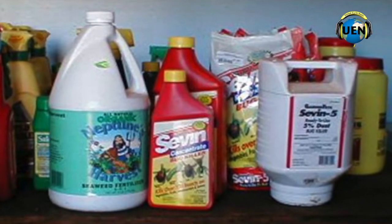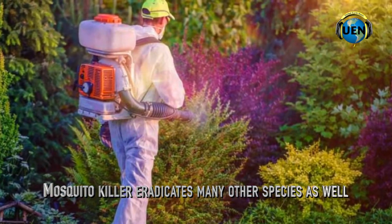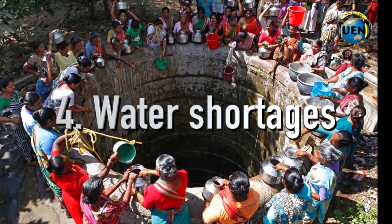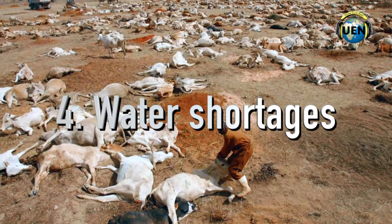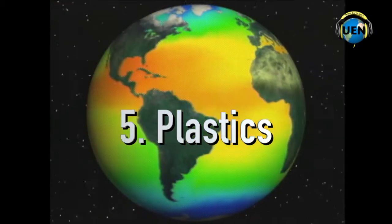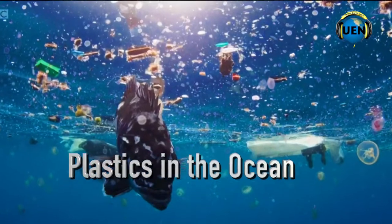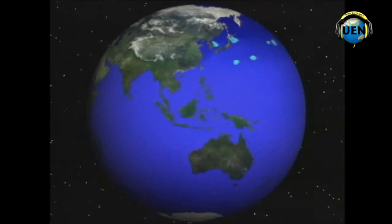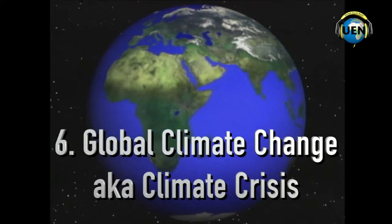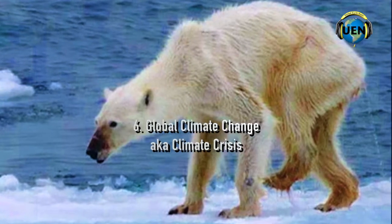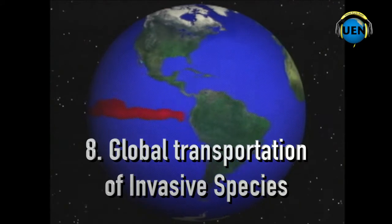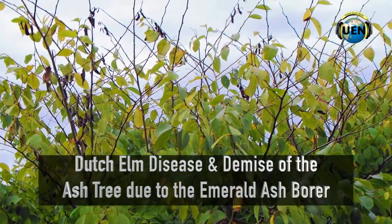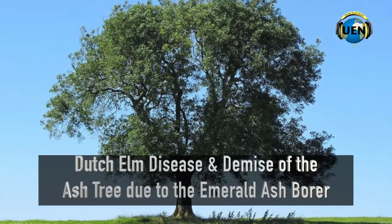Using pesticides in your garden and a bug zapper to kill mosquitoes kills many other species as well. A fourth cause is that water supply shortages are increasing throughout the planet, putting stress on plants and animals and causing them to die off. Plastics in the ocean break into microscopic particles that are consumed by fish and kill them — and these are the fish that we are eating. Global climate change affects the survival of many species, and they can die because their food supplies disappear. The transportation of organisms around the world produces invasive species, such as Dutch elm disease and the demise of ash trees in the Midwest due to the emerald ash borer.